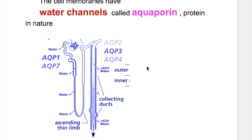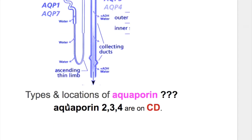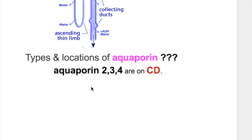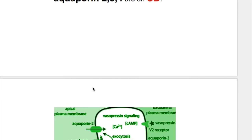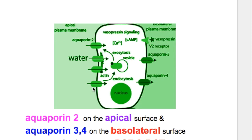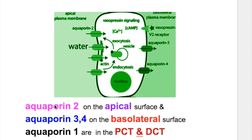For principal cells, ADH acts to cause water reabsorption. Cell membranes have water channels called aquaporins, which are protein in nature. Aquaporin 2, 3, and 4 are located on the collecting duct.